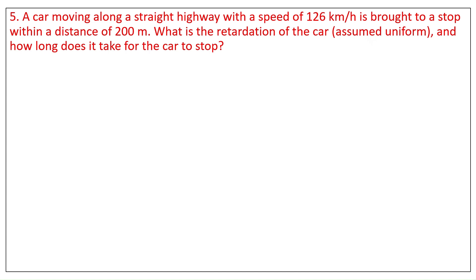Question 5. A car moving along a straight highway with a speed of 126 km/h is brought to a stop within a distance of 200 meters. What is the retardation of the car, assumed uniform, and how long does it take for the car to stop?